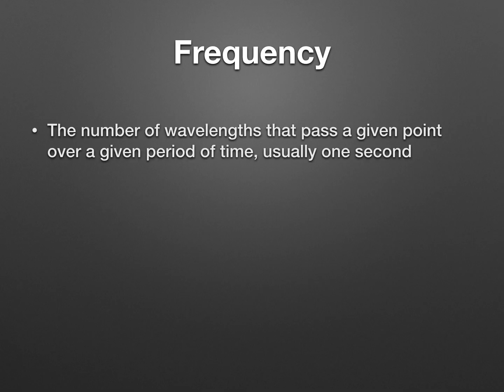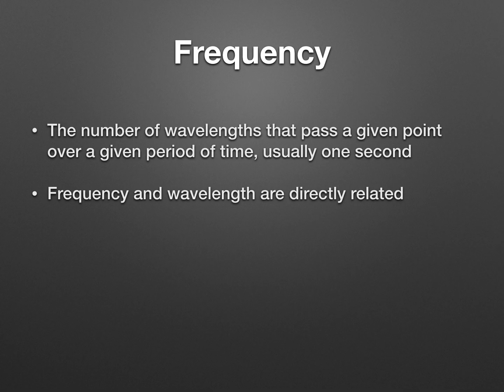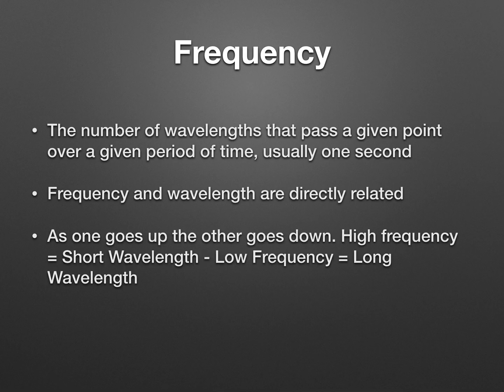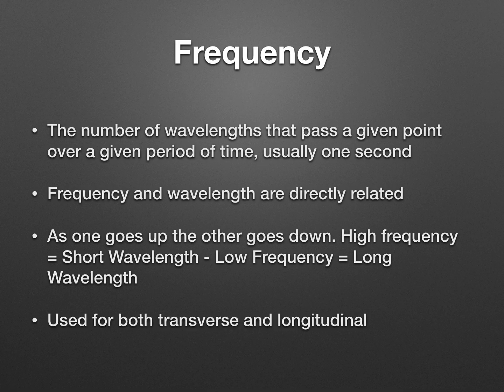Frequency, as we talked about in class, is how often you frequent something. By definition, it's the number of wavelengths that pass a given point over a given period of time — usually one second, because of how fast waves move. Frequency and wavelength are inversely related: as one goes up, the other goes down. A high-frequency wave has a very short wavelength, while a low-frequency wave has a very long wavelength. These apply to both transverse and longitudinal waves.